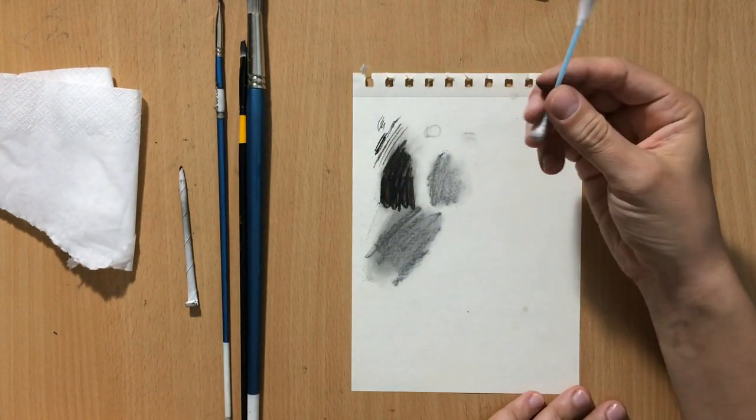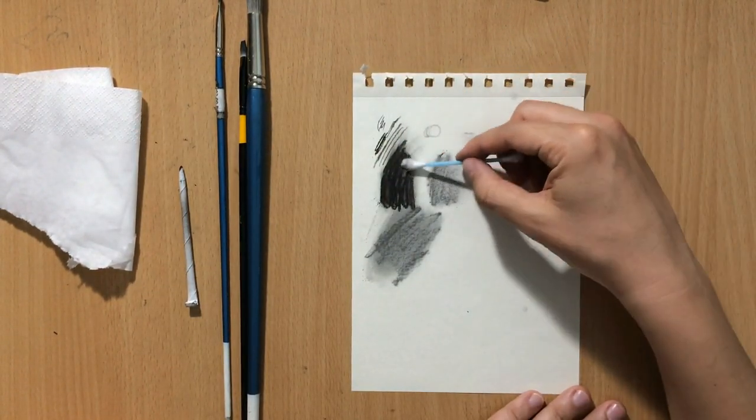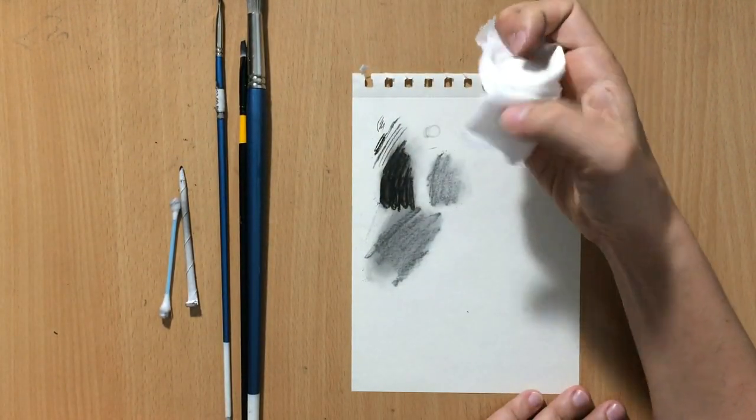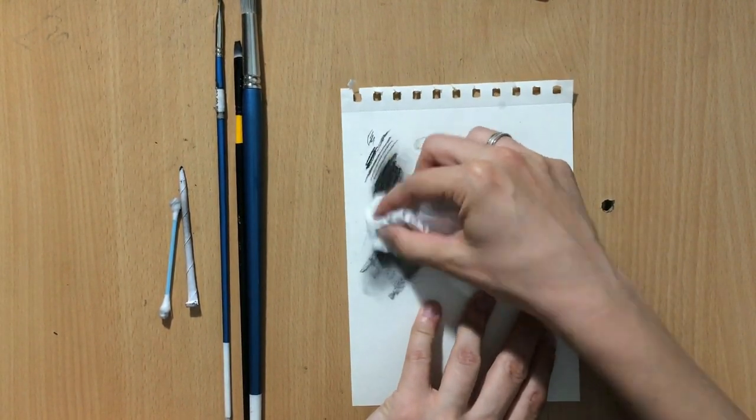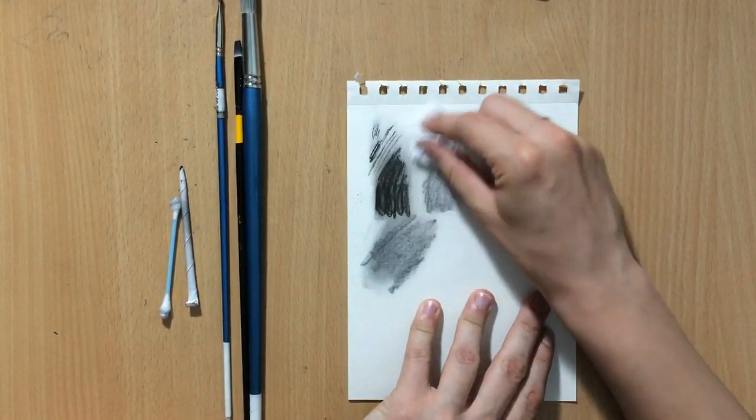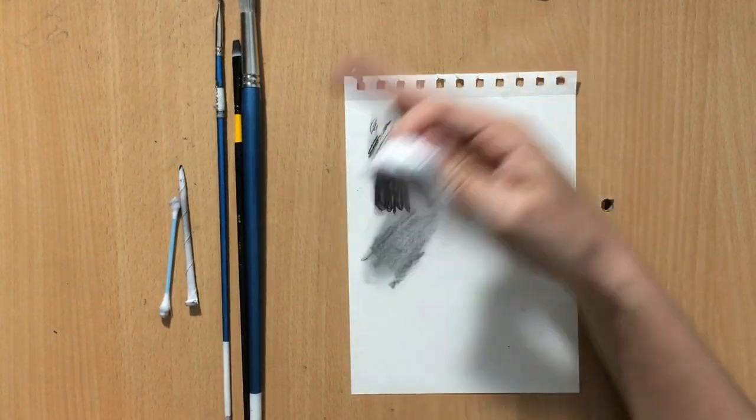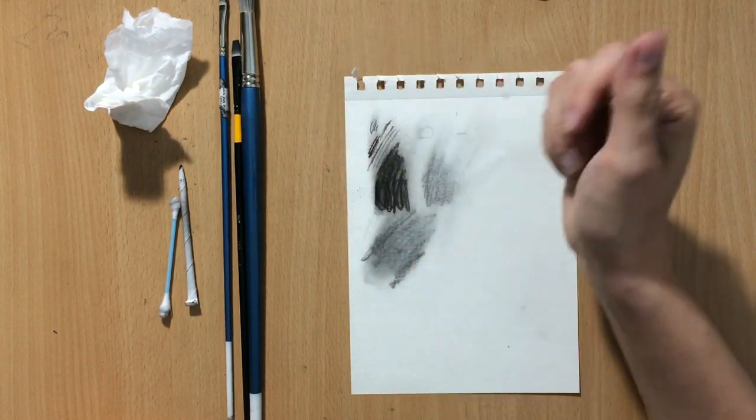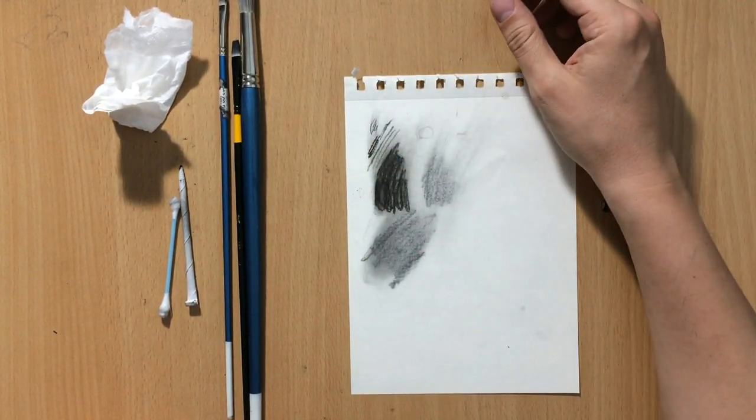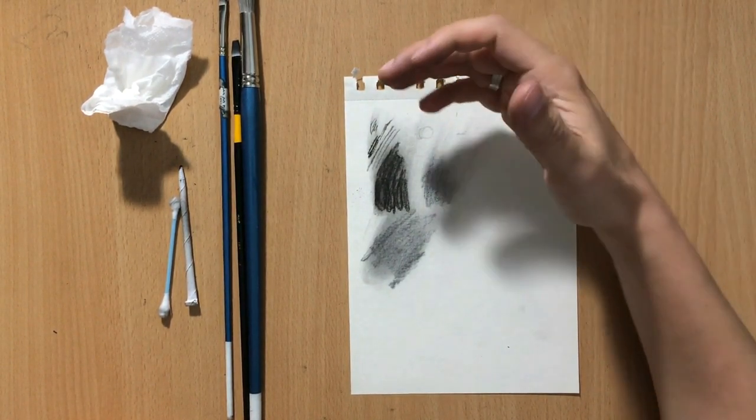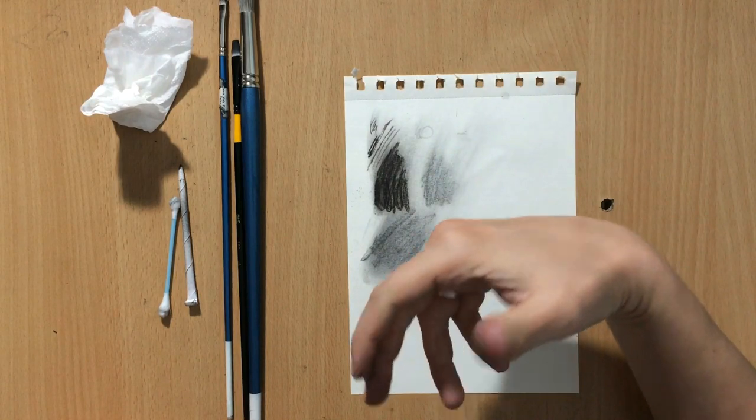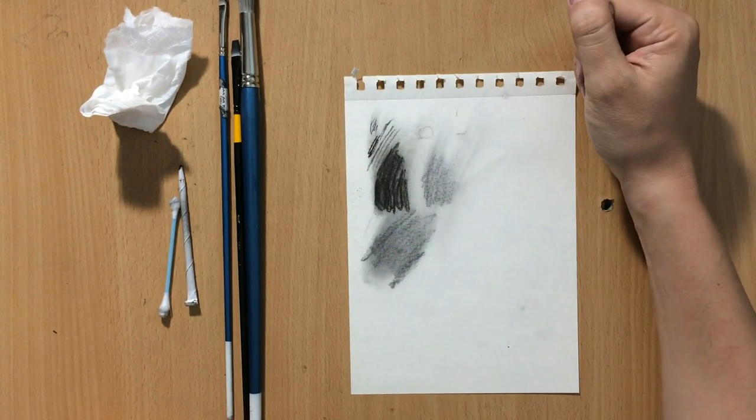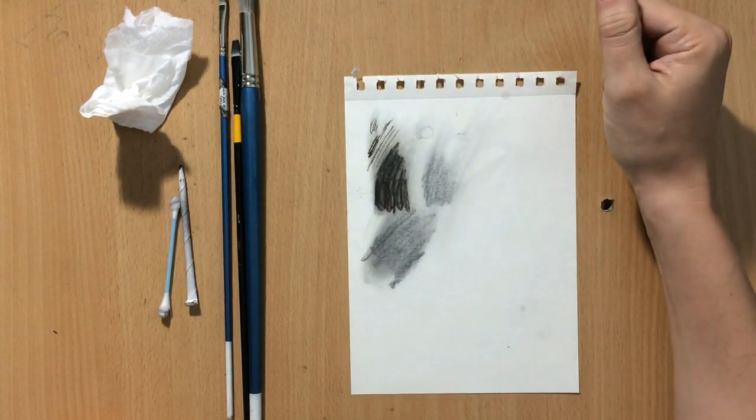Another good blending tool is a Q-tip—use it for lighter areas and soft transitions. There's also paper towel for blending larger areas and spreading charcoal around. Which blending tool is best? As with drawing tools, there's no single best. I like to combine their use and take advantage of what each offers.